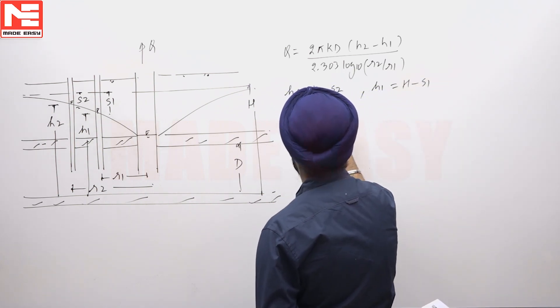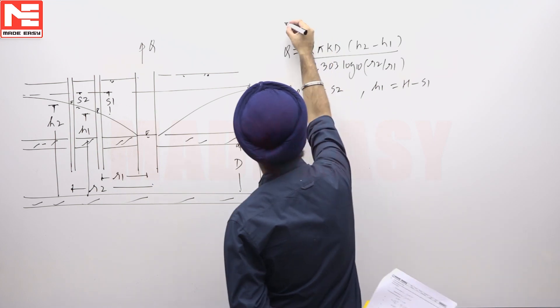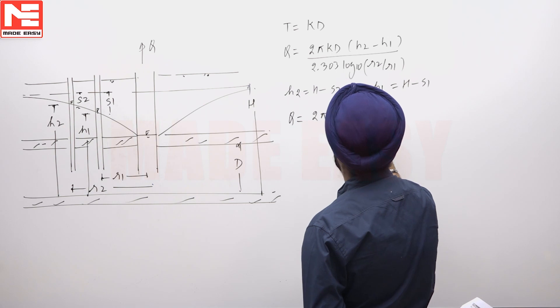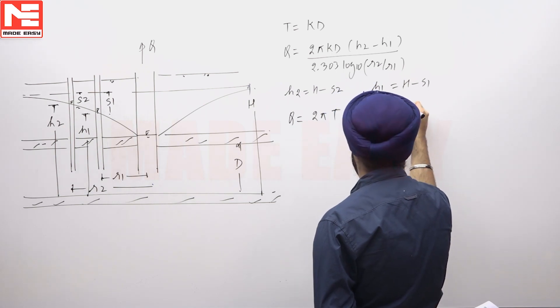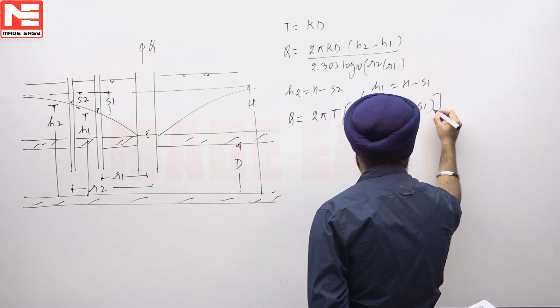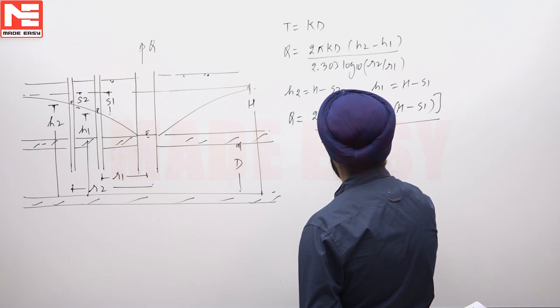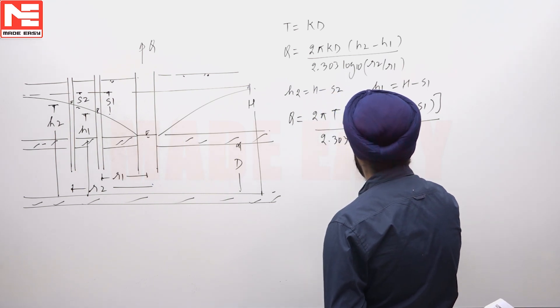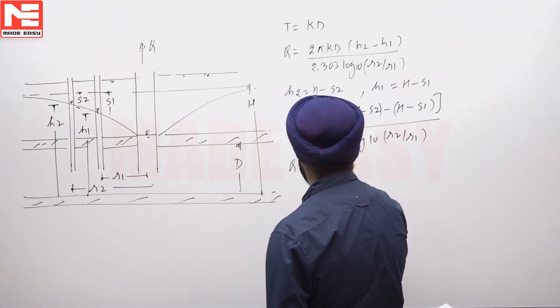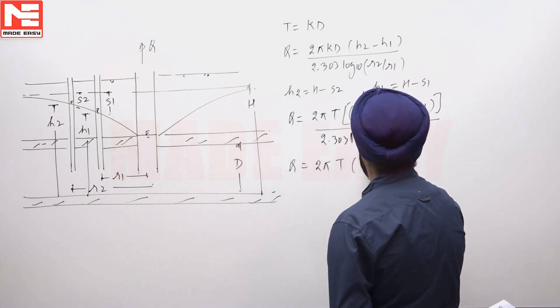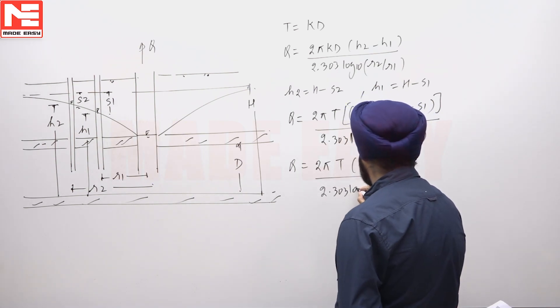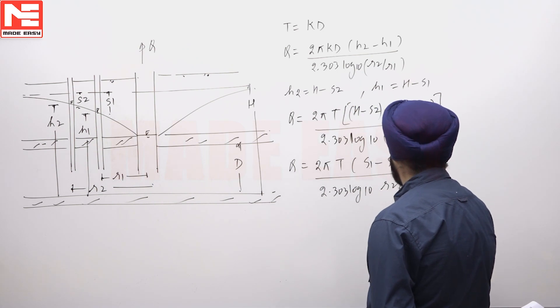We can say discharge is also equal to 2πKd, transmissibility which is to be found equals permeability into depth, times transmissibility into (H - S2) minus (H - S1) divided by 2.303 log₁₀(R2/R1). So discharge comes out to be Q = 2πT(S1 - S2) divided by 2.303 log₁₀(R2/R1).